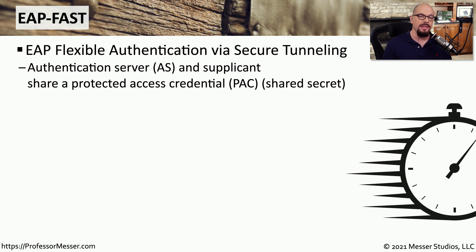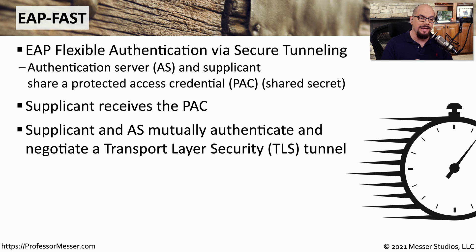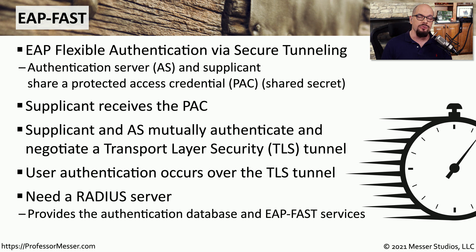One way of securely providing this authentication process is through a method of EAP called EAP-FAST. FAST stands for Flexible Authentication Via Secure Tunneling. This ensures that the authentication server and the supplicant can transfer information between each other over a secure tunnel. This is accomplished with a shared secret referred to as a Protected Access Credential, or PAC. The supplicant receives the PAC and then sets up a Transport Layer Security tunnel. This TLS tunnel is very similar to the TLS mechanism used to encrypt information within a browser. Once the TLS tunnel is in place, everything sent across is encrypted and authentication details are sent over that tunnel. EAP-FAST is commonly used with a centralized authentication server such as RADIUS, where both the authentication database and EAP-FAST services run on the RADIUS server.